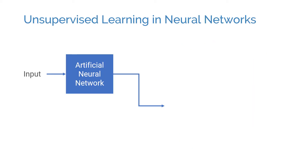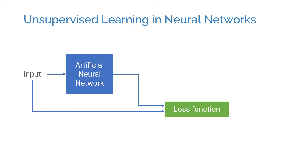Let's talk about how we can train a neural network in an unsupervised fashion. We need to define some sort of target to train a neural network. One thing we can do is to train a model to learn a mapping from the input data to the input data. Since the inputs and the outputs are the same, the model would try to reconstruct its input. These types of models are called autoencoders.